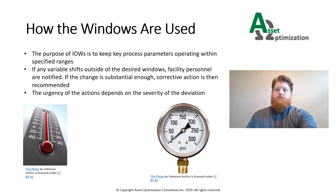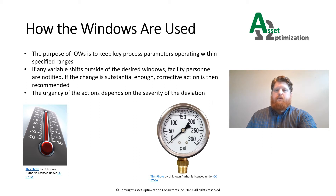How are IOWs used? The desired process variable or variables will be monitored. If these particular variables start changing or moving outside their desired range, alarms will be sent out to the operators. Depending on how far the variable deviates will determine how quickly a response is needed. Sometimes intervention is not necessary, only continued monitoring. By controlling the key variables, accelerated damage and failure rates can be avoided.